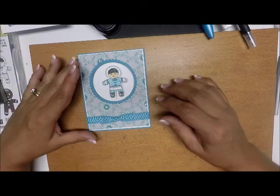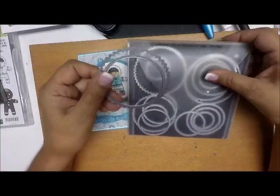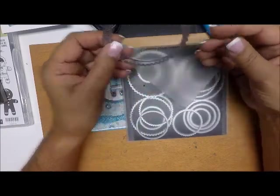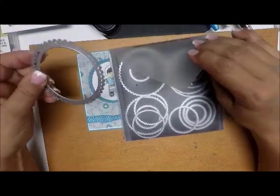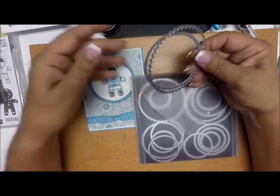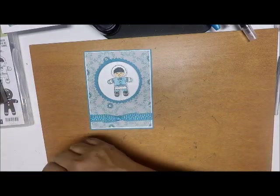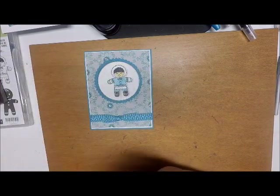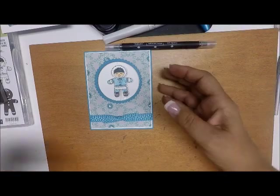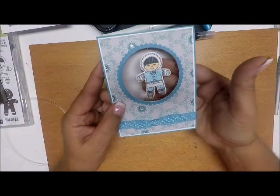We are using the layering circles framelits - the second largest circle and a scallop that nests with that so we can make this frame. I'm also using the watercolor pencils with the blender pen.